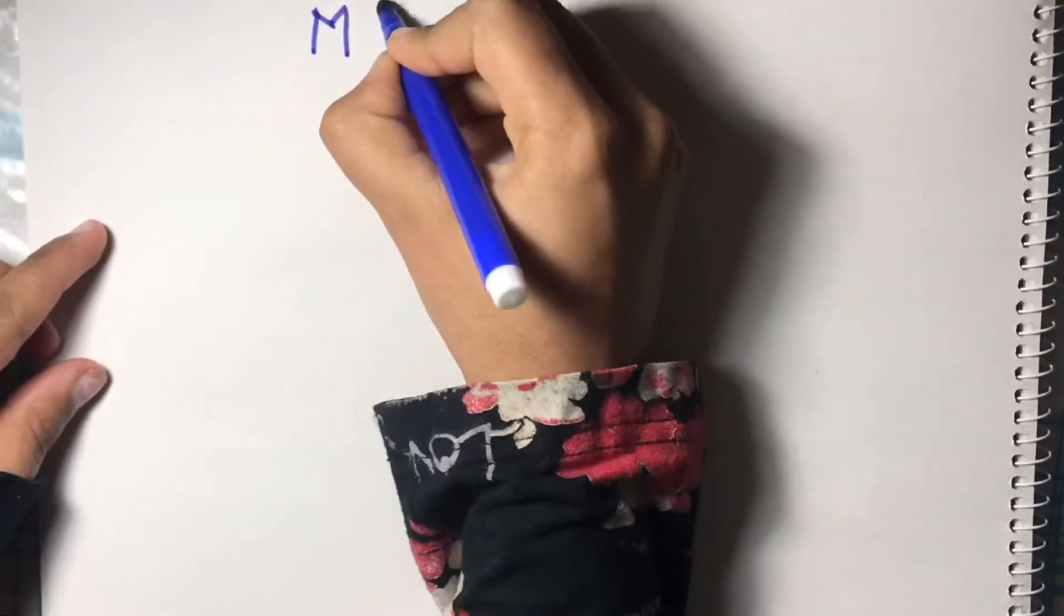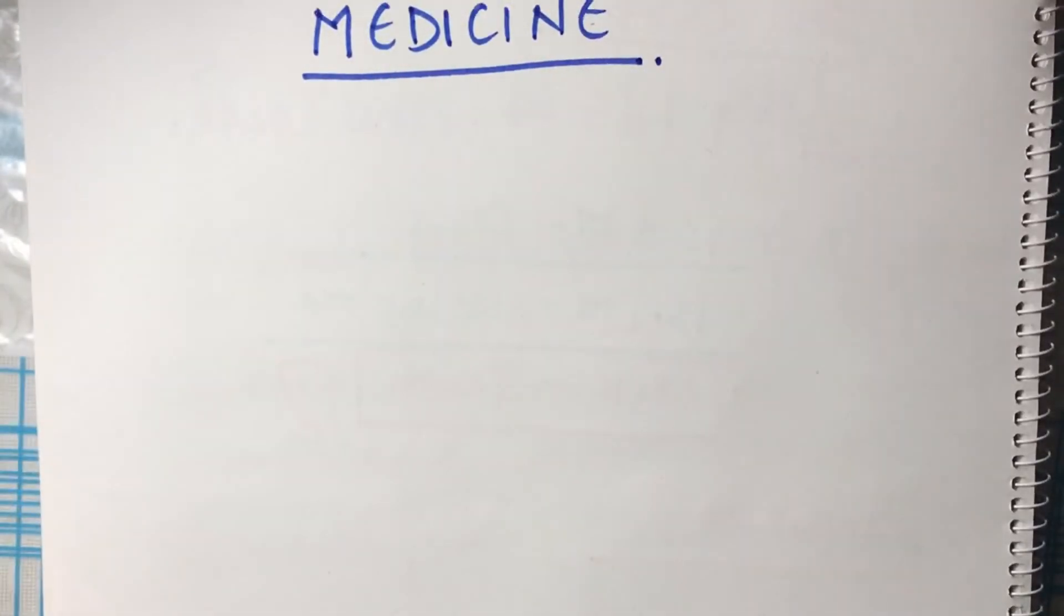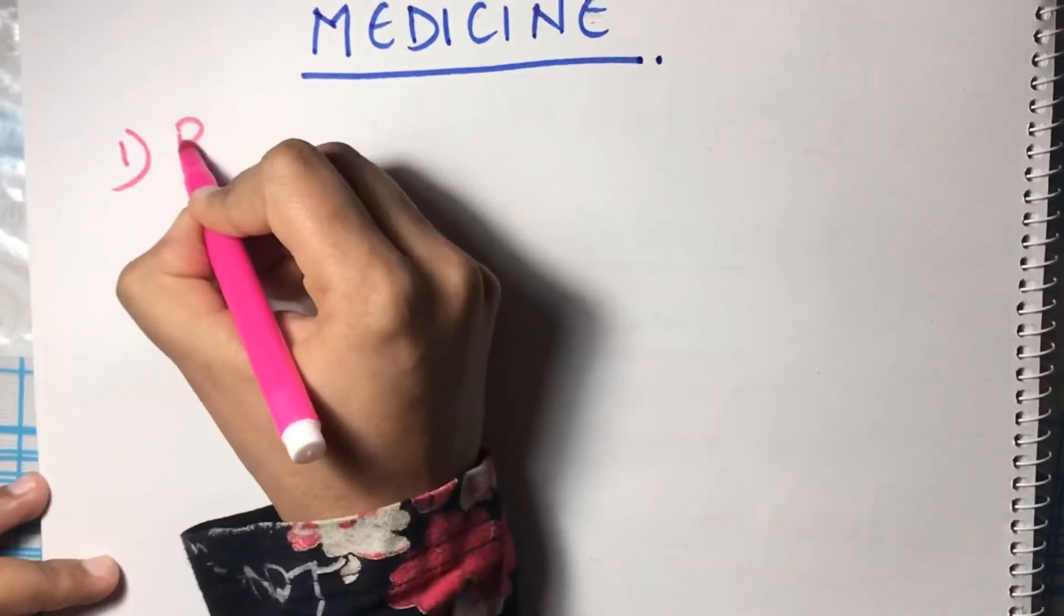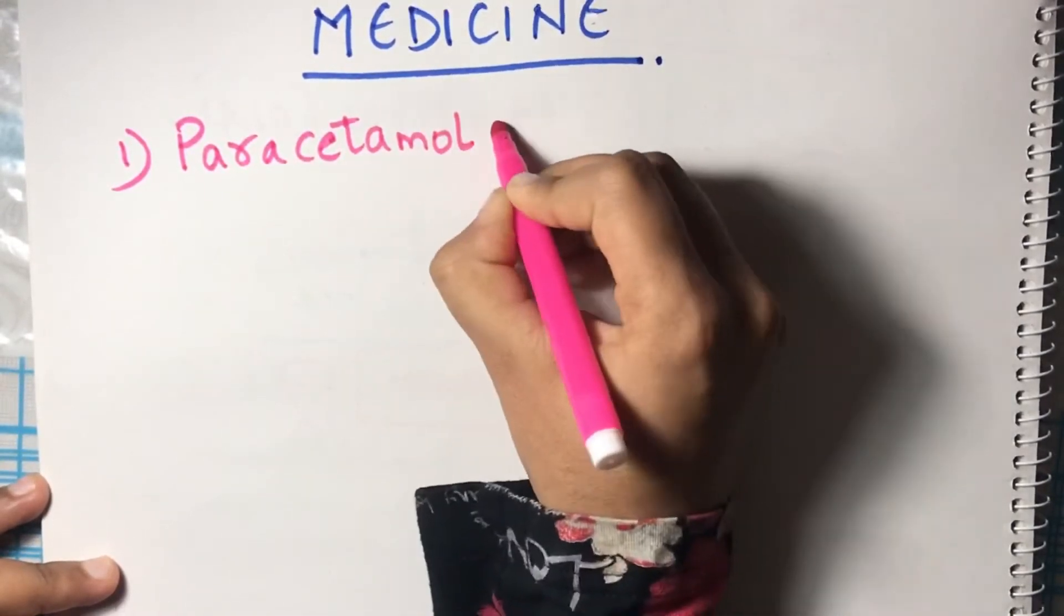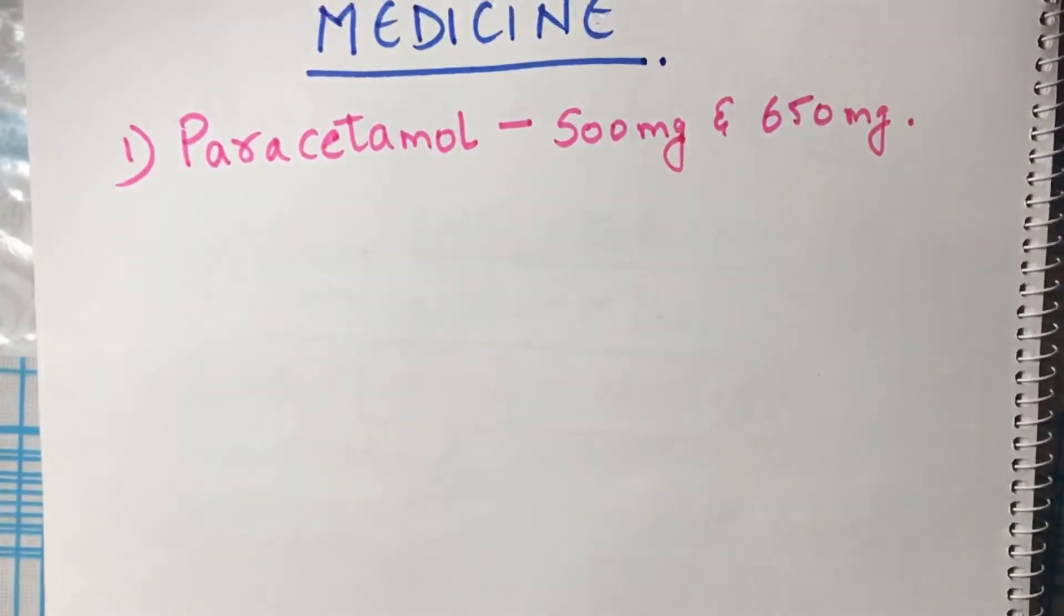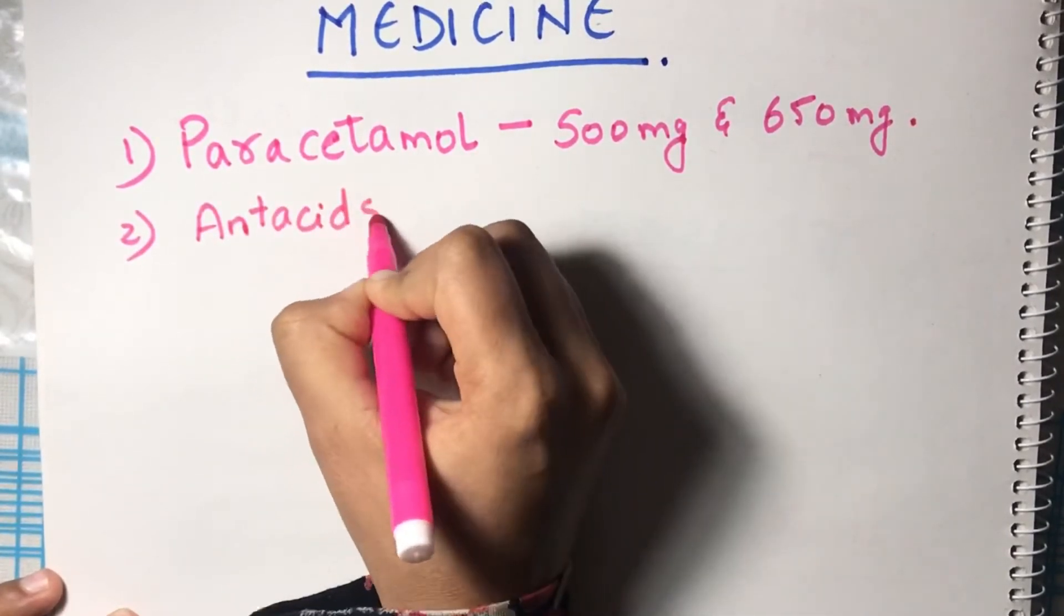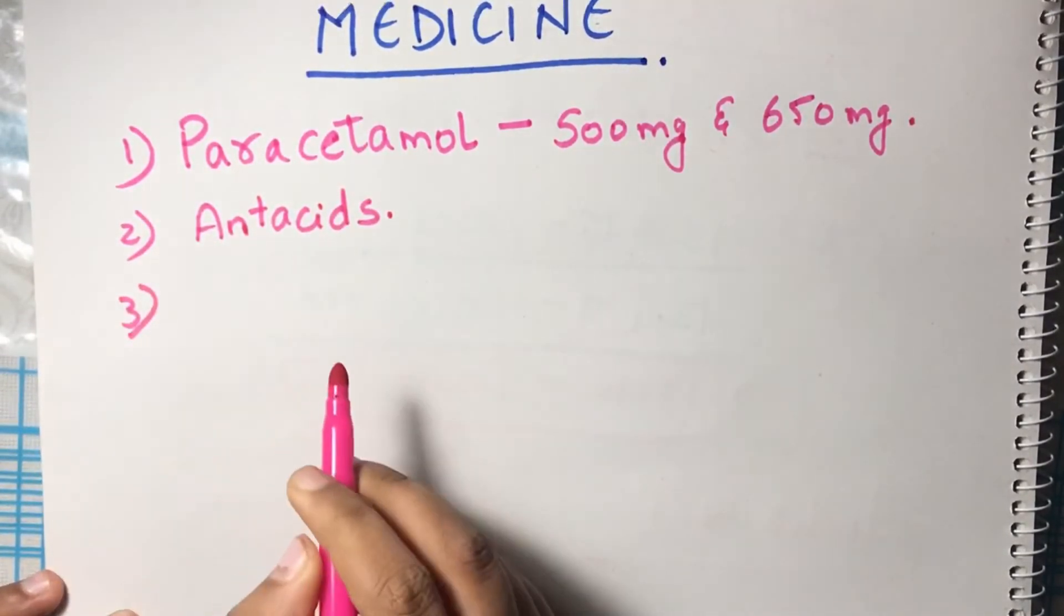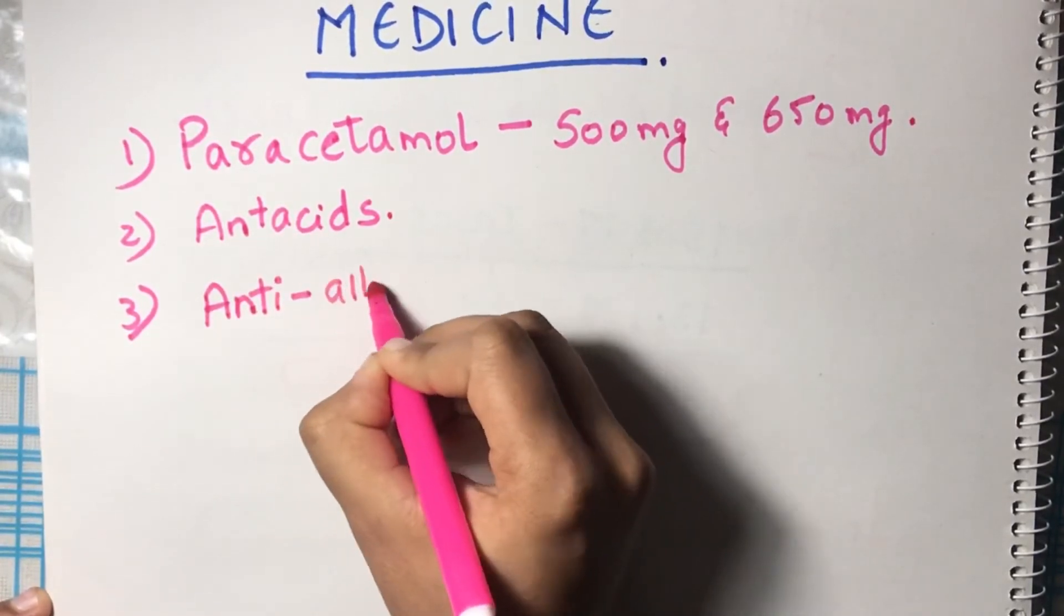Now I'm going to tell you about certain medications, certain medicines which you should have in your home for future precautions and for treatment as well. The first one is paracetamol, which comes in two doses: 500 mg and 650 mg. The second one is antacids, because of the coronavirus people get ulcers in the stomach, and because of the medicine there are some gastric problems. The third one is anti-allergic, and the fourth one is antibiotics.